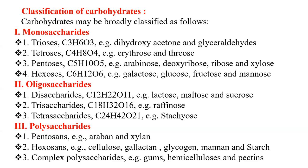Examples of oligosaccharides include disaccharides like lactose, maltose and sucrose; trisaccharides like raffinose; and tetrasaccharides like stachyose. Polysaccharides have examples of pentosans like arabin and xylan; hexosans like cellulose, galactan, glycogen, mannan and starch; and complex polysaccharides include gums, hemicellulose and pectins.